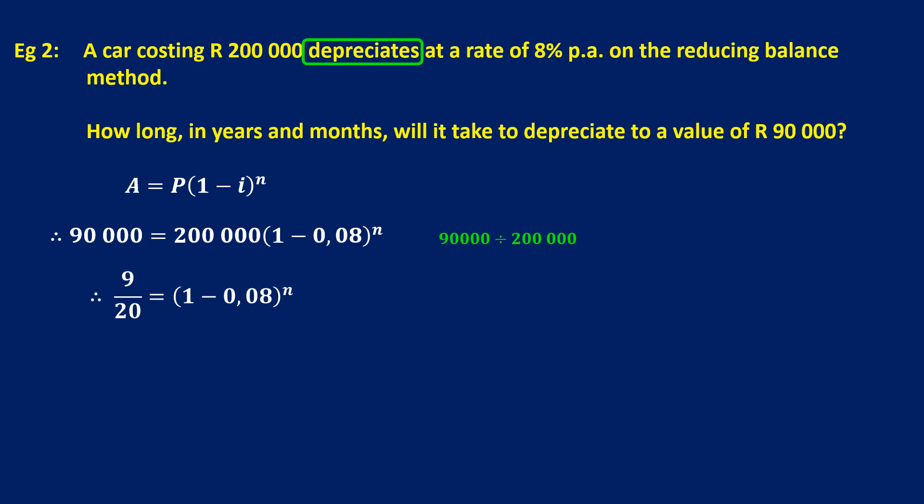Now, we need to solve for exponents. And the rule when we solve for exponents is we should use log. Then the base of the exponent becomes the base of the log. And we write down our last number. Type that into your calculator. And you get 9.57654 years.